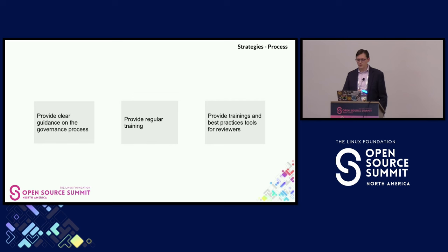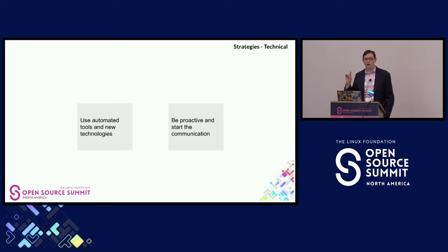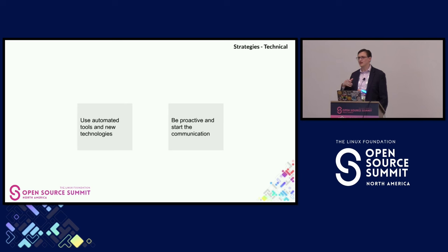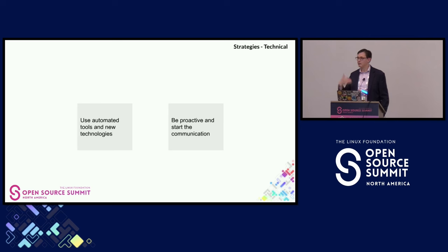For technical barriers, two recommendations are to use automated tools and new technologies. Automated tools have an interesting effect — especially using CI/CD to provide feedback on formatting. It takes the load off the maintainer to push back on norms, since it's just the machine saying so. This is easier socially for both parties: the contributor feels less talked down to by the maintainer, and the maintainer spends less time on it. Also, be proactive and start the communication — help people by asking if they've done this before and offering to show them.